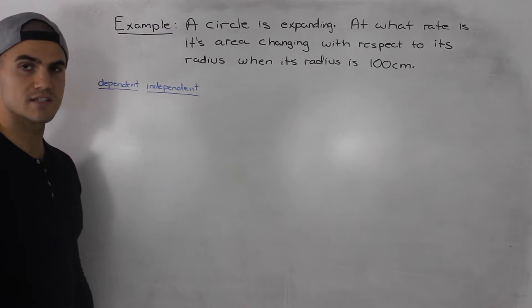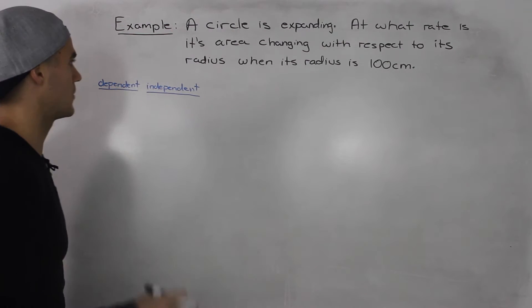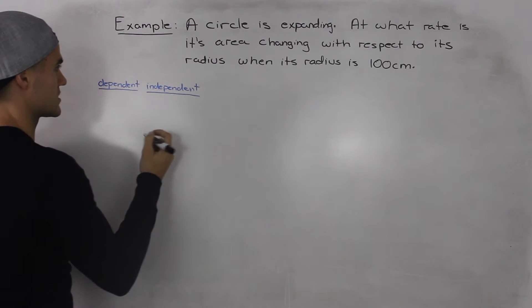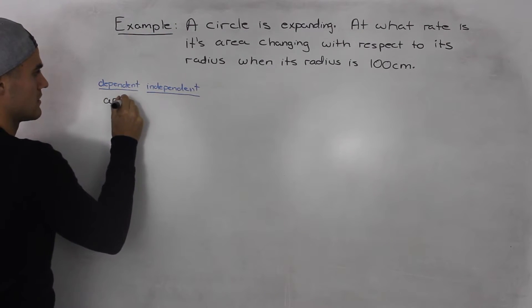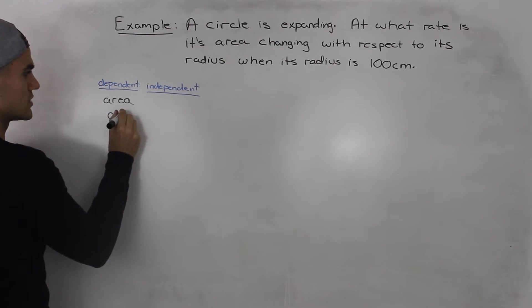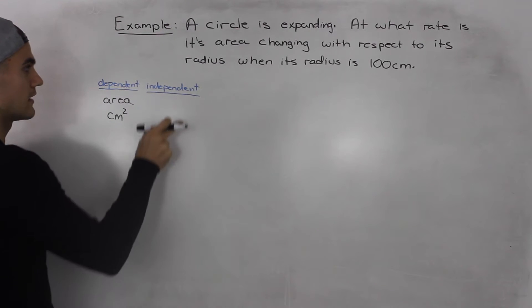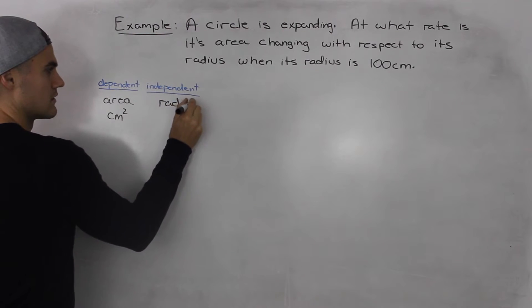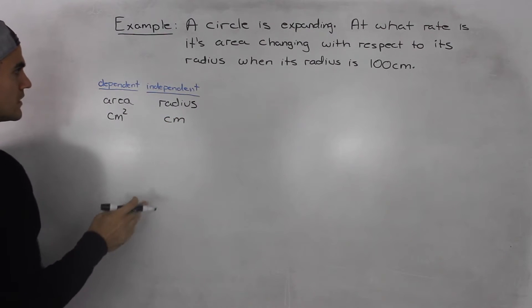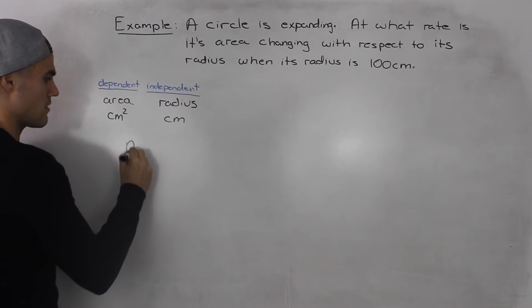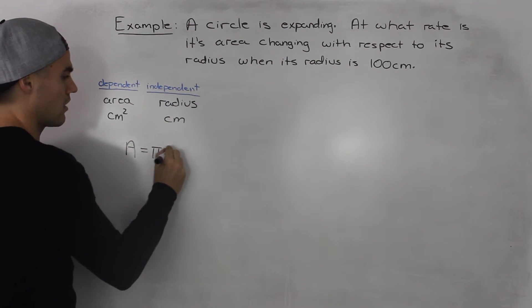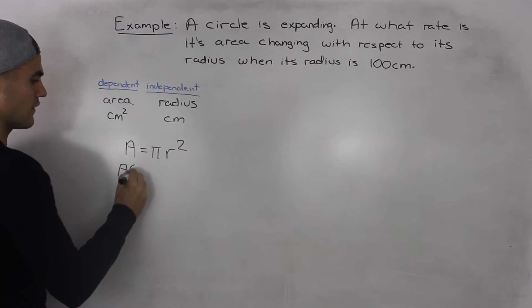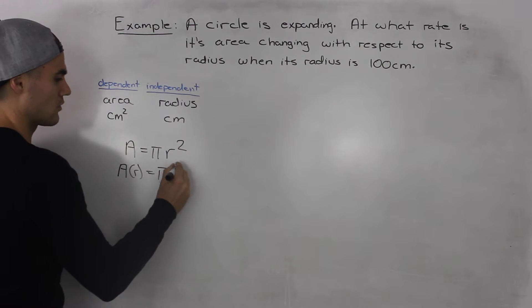The first thing you want to figure out in these types of questions is what's the dependent variable and what's the independent variable. The area is changing with respect to the circle's radius, so the dependent variable is the area, measured in centimeters squared. The independent variable is the radius, measured in centimeters. To relate these two, we know the area of a circle is equal to π r squared — that's the equation we'll be dealing with. You could also write A as a function of r equals π r squared. Either works.